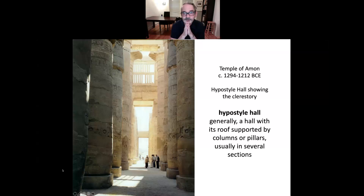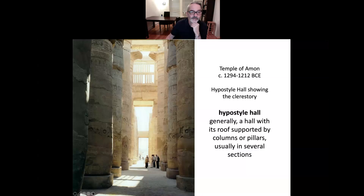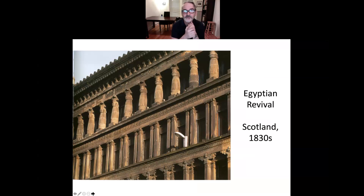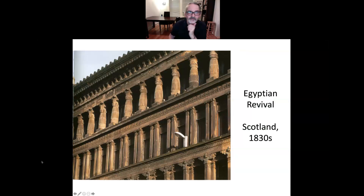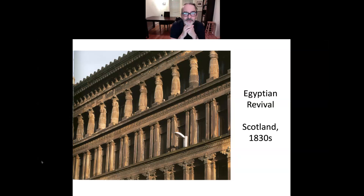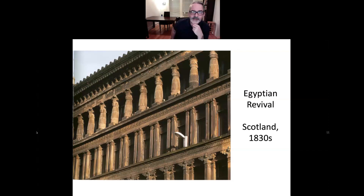Here's a photo of one of these places which gives you some appreciation for the scale of these structures — they weren't messing around. Now here is some Egyptian Revival from Scotland, built in the 1830s. You can see these squat Egyptian-looking columns. The capitals on the upper story have Egyptian palm leaf capitals, but the later revival styles kind of throw everything in — this has elements of both Greek and Egyptian architecture.